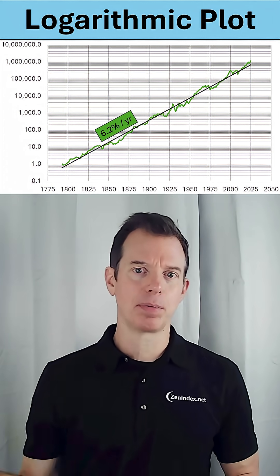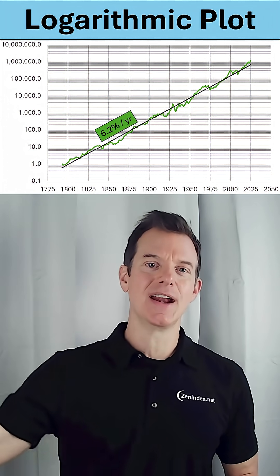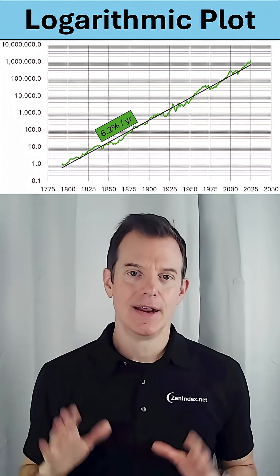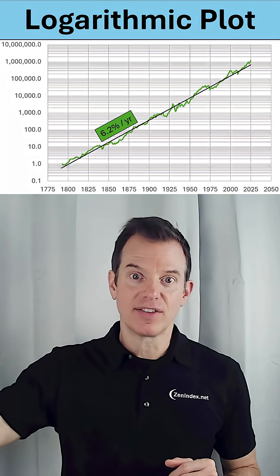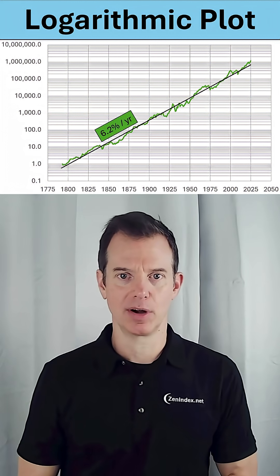A logarithmic plot is a plot where on this vertical axis, it goes 1, 10, 100, 1,000, 10,000. It grows by factors of 10. Not 1, 2, 3, 4, 5, 6, 7, 8, 9, 10, like the graph that you learned about in algebra class.